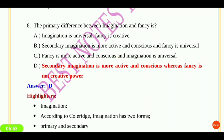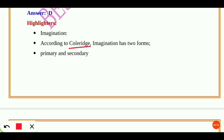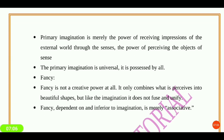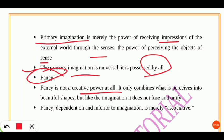According to Coleridge, imagination has two forms: primary and secondary. Primary imagination is merely the power of receiving impressions of the external world through the senses, and is universal — possessed by all. Fancy is not a creative power at all; it combines what it perceives into beautiful shapes, but unlike imagination, it does not fuse and unify.